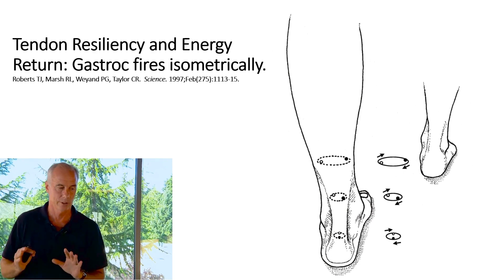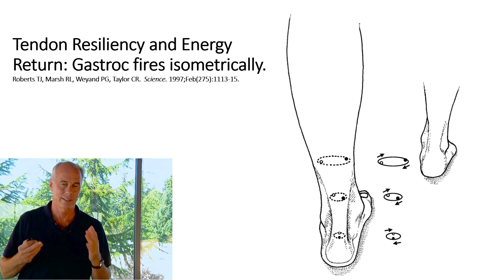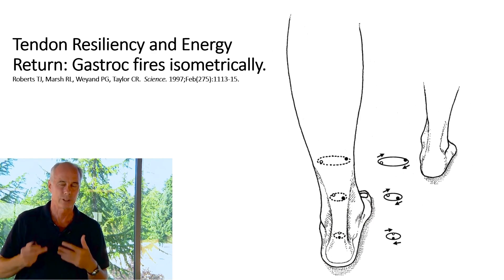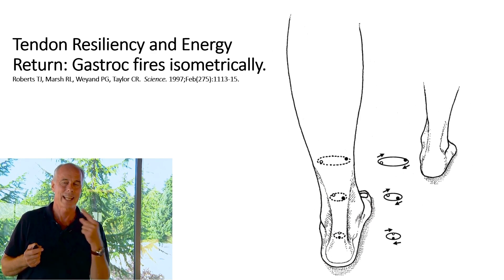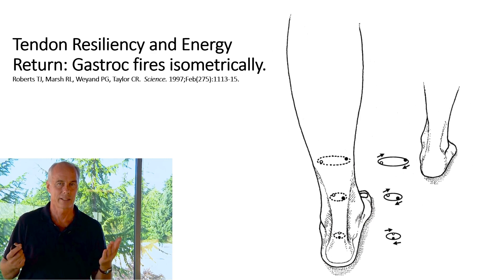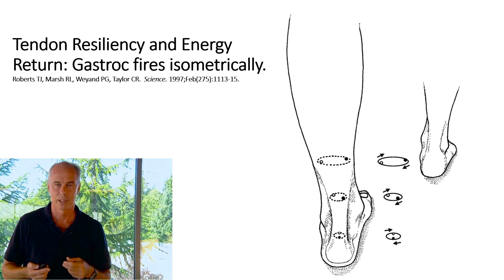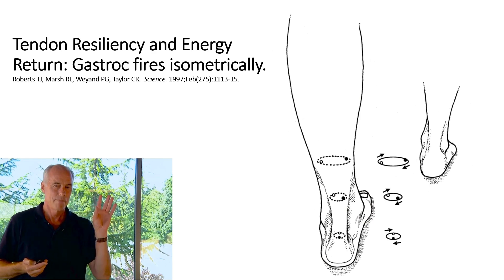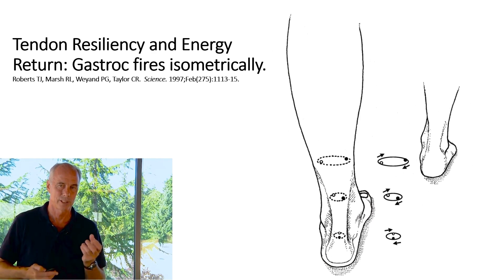This also explains why tightness can be helpful — tight people are often metabolically more efficient because they store and return energy in their tendons a little better. This study showed that the rotation of the tendon was vital. Other tendons do it too: rectus femoris, a portion of supraspinatus, and tibialis posterior. The key point is that muscles isometrically tense, and the distal muscles' tendons store and return energy.